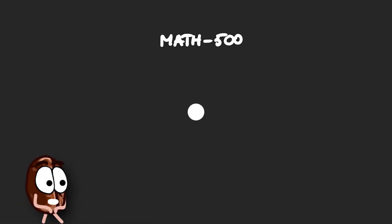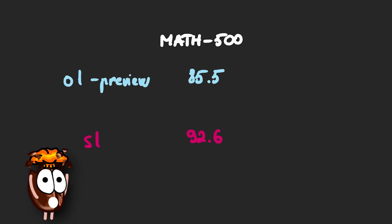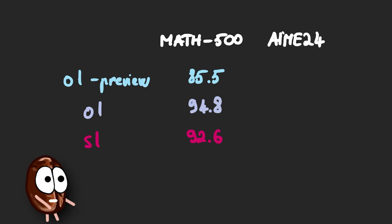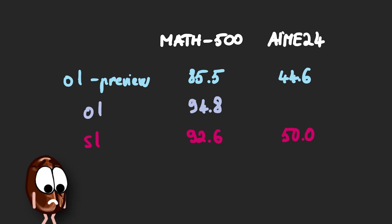With just these thousand examples, S1 achieved remarkable results. On the MATH 500 dataset, S1 scored 92.6% accuracy, outperforming O1 preview's 85.5 and nearly matching O1's 94.8. On the challenging AMC24 test, S1 reached 50% accuracy, significantly better than O1 preview's 44.6, but nowhere near O1's 74.4.